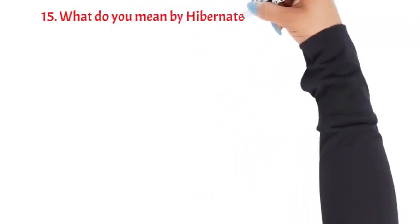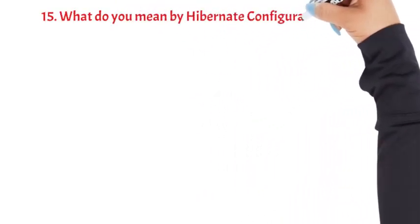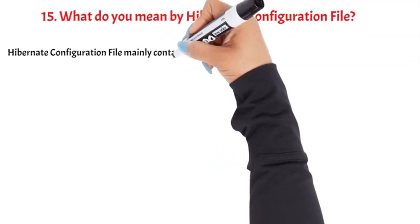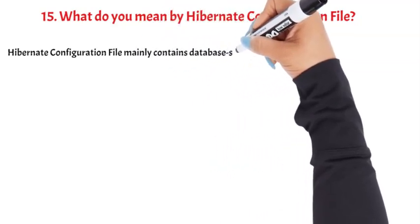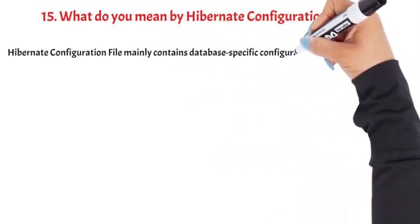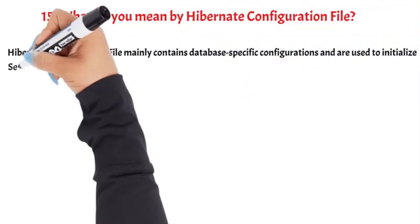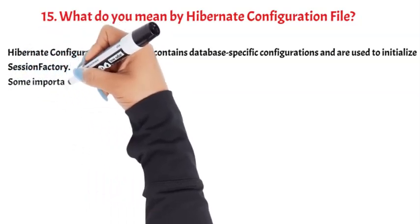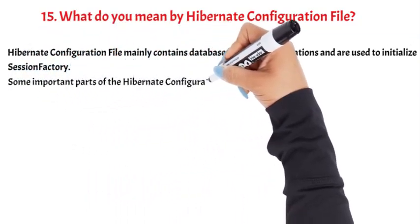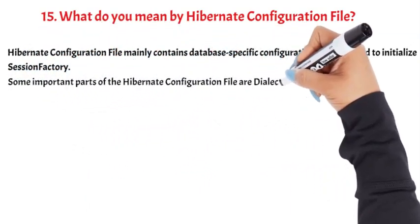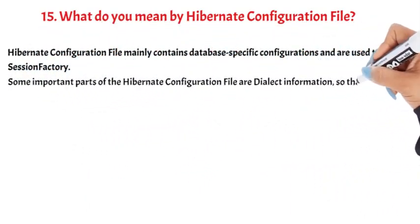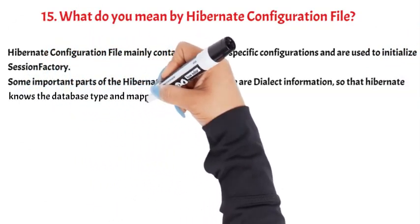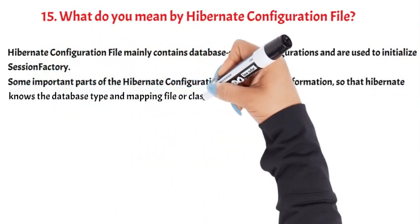Question 15: What do you mean by Hibernate configuration file? The Hibernate configuration file mainly contains database-specific configurations and is used to initialize SessionFactory. Some important parts include dialect information so that Hibernate knows the database type, and mapping file or class details.